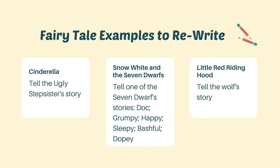Do you need some ideas to write your own fractured fairy tale? Here are some fairy tale examples you might think of using for your own story or rhyme. Cinderella — tell the ugly stepsister's story. Snow White and the seven dwarves — tell one of the seven dwarves' stories: Doc, Grumpy, Happy, Sleepy, Bashful, or Dopey. Or Little Red Riding Hood — tell the wolf's story.